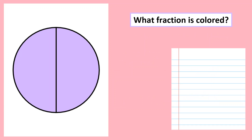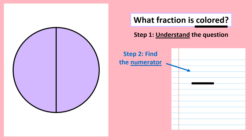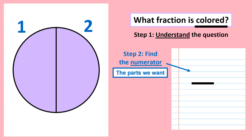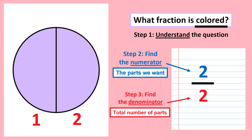Have a look at this one. What fraction of this circle is colored? Understand the question — it wants the colored parts. Step two: find the numerator — how many parts are colored? One, two — two parts are colored, so we write two on top. And how many total number of parts? One and two — there are two total parts. Remember, if the numerator and denominator are the same number — here we have two and two — we say this is one whole.